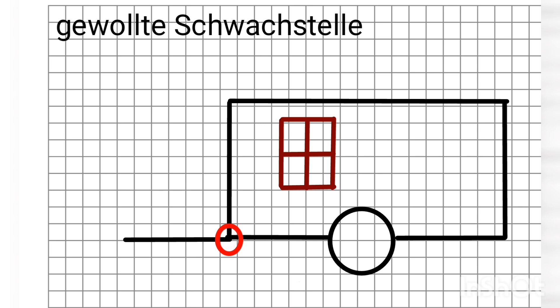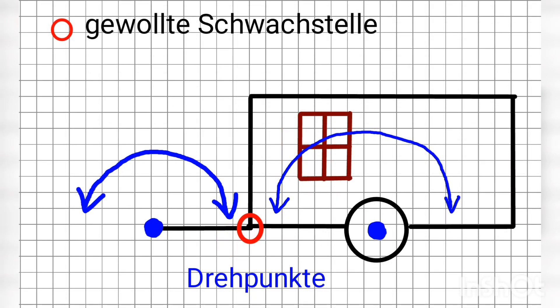How this happens, we explained or saw in the last video. We have two pivot points, one at the wheels and one where the drawbar is attached to the bicycle.